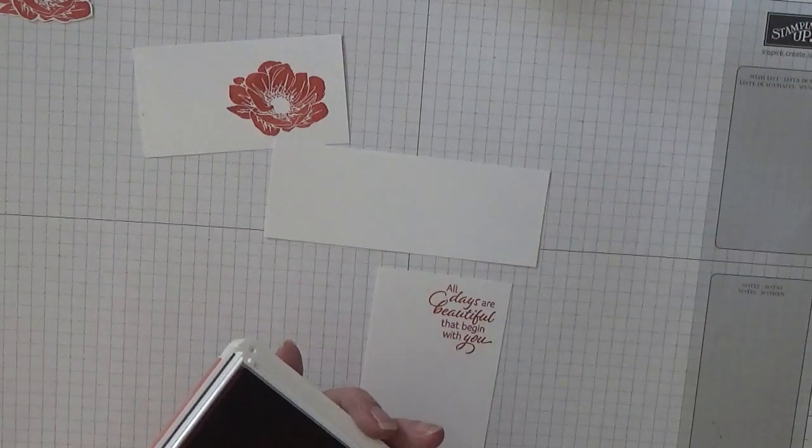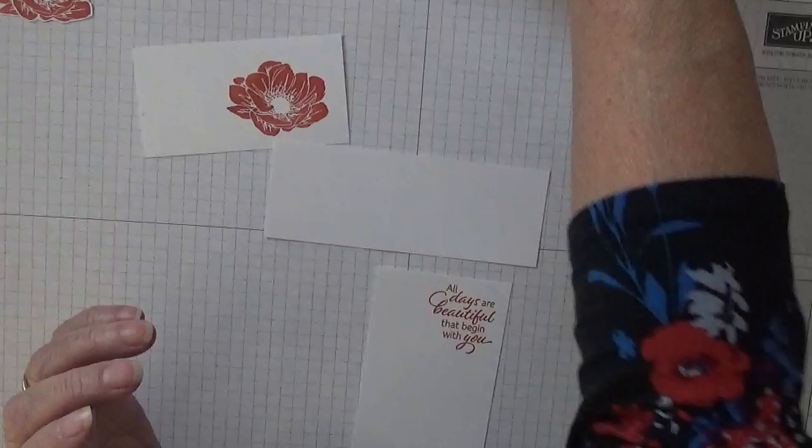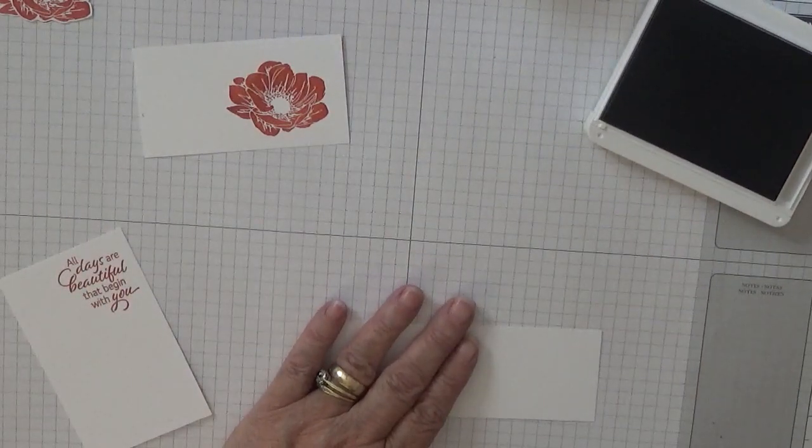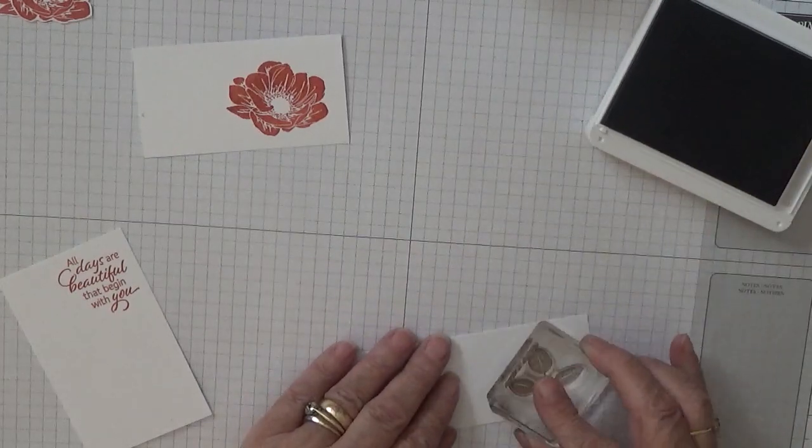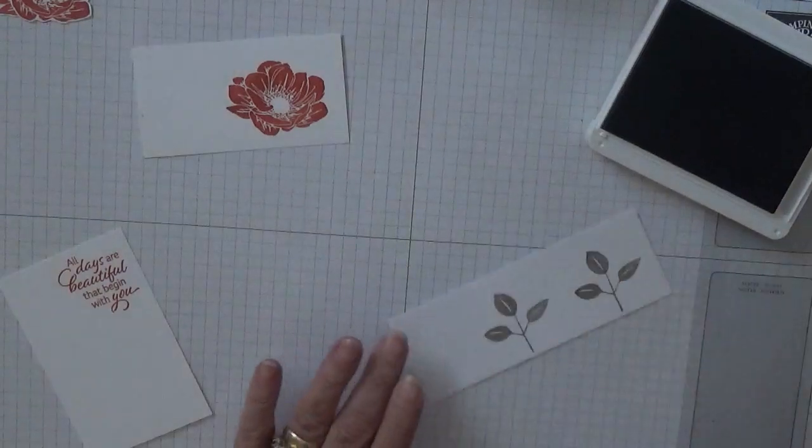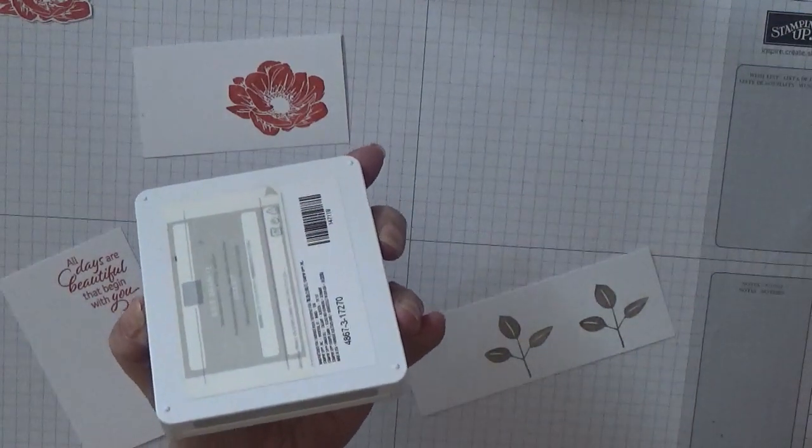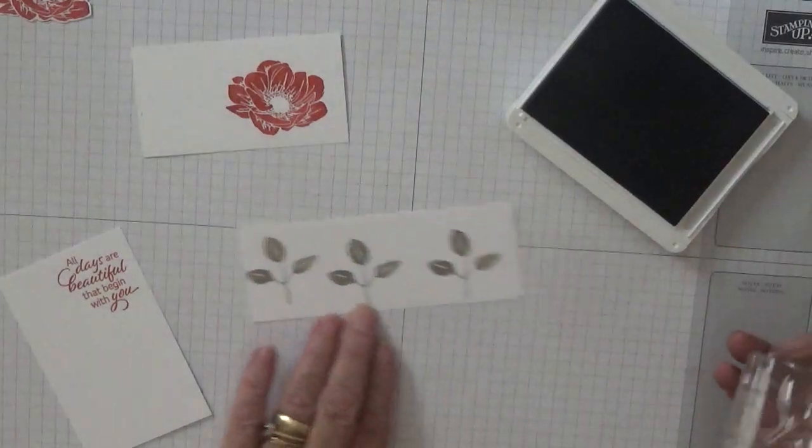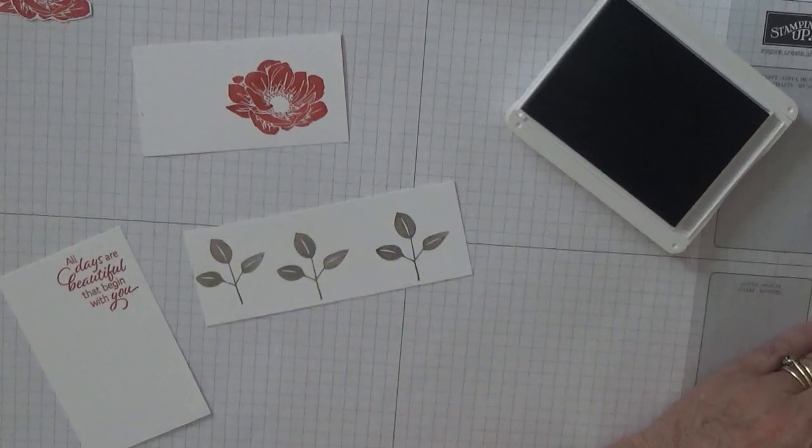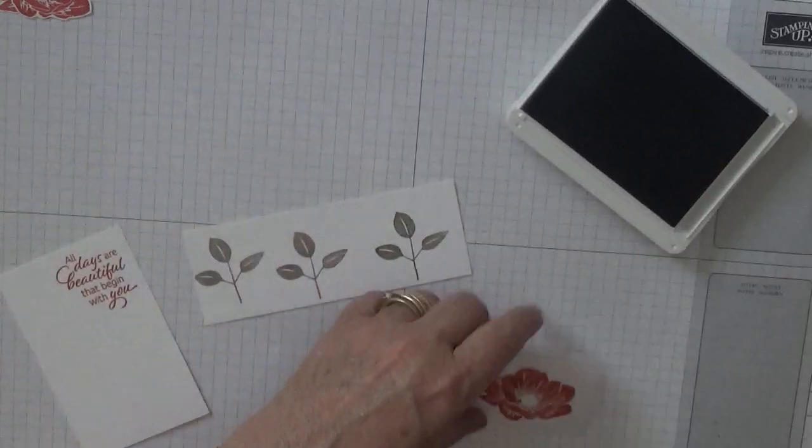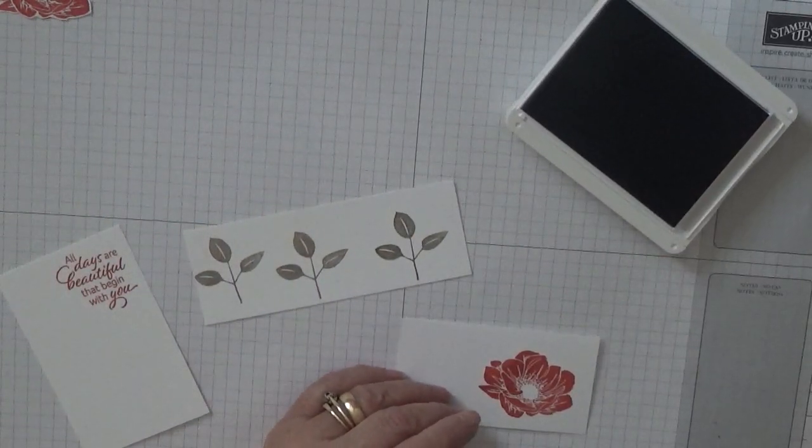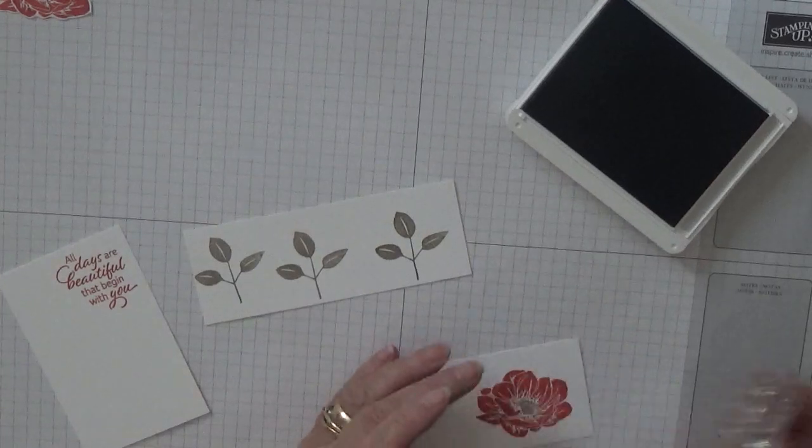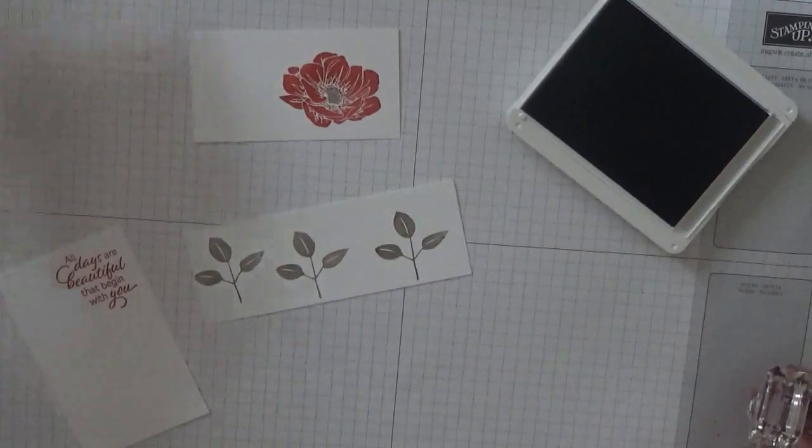Now we can get rid of this one and bring in Smoky Slate and stamp our three flowers, leaves, sorry. This isn't Smoky Slate is it? Seems a bit dark for Smoky Slate. What we also want to do with this is put in our flower center, like that. I didn't do it on these two because they'll be covered up.